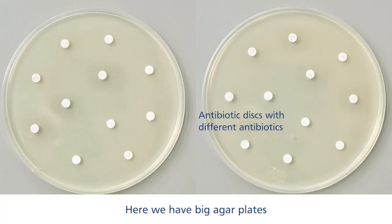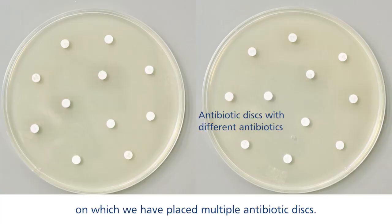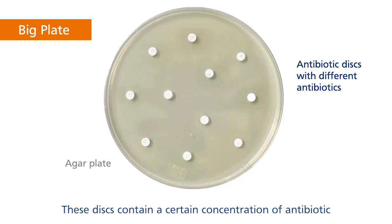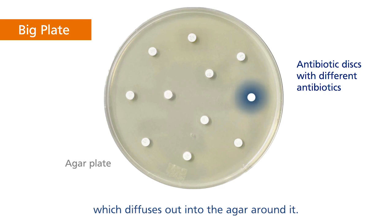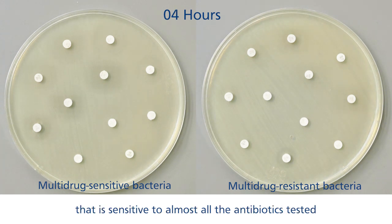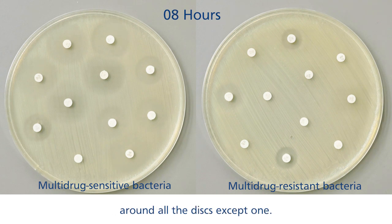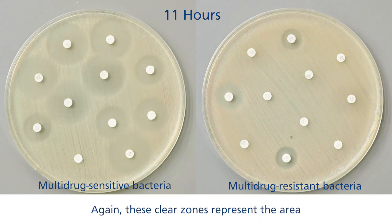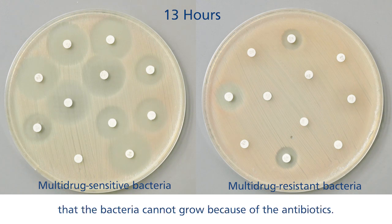Here, we have big agar plates on which we have placed multiple antibiotic discs. These discs contain a certain concentration of antibiotic which diffuses out into the agar around it. On the left, we have a typical bacteria that is sensitive to almost all the antibiotics tested, and you can see clear zones of inhibition around all the discs. These clear zones represent the area that the bacteria cannot grow because of the antibiotics.